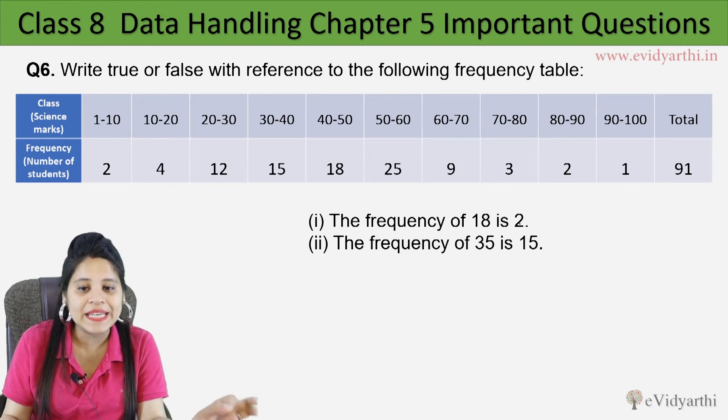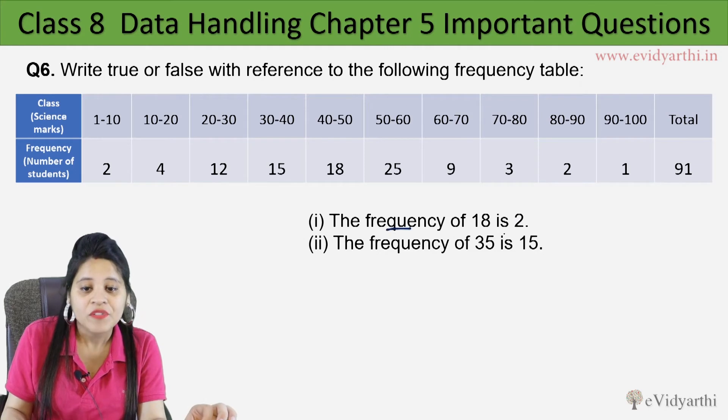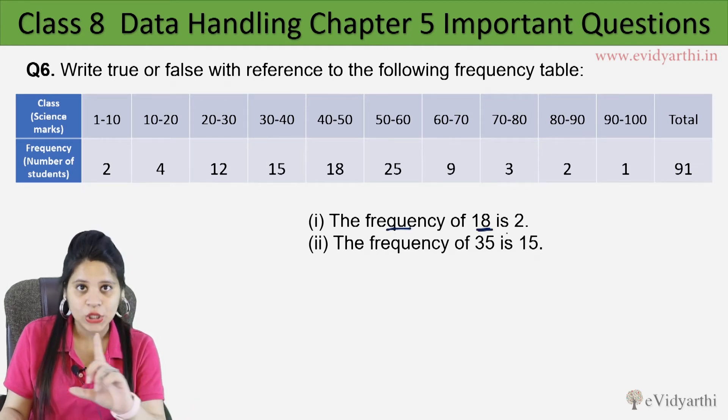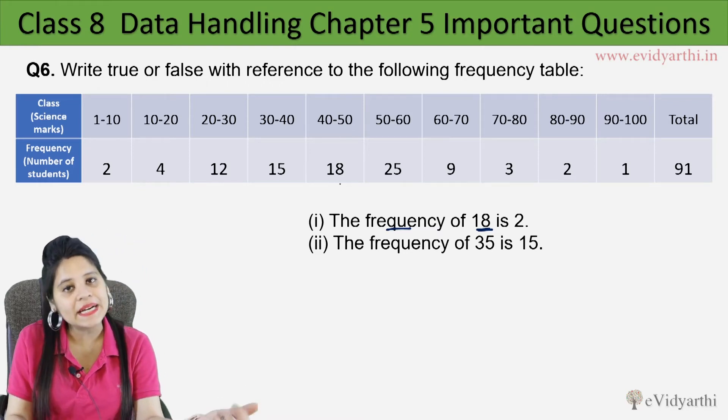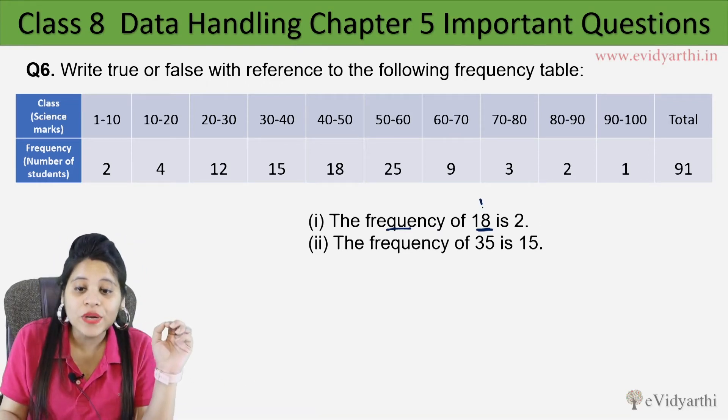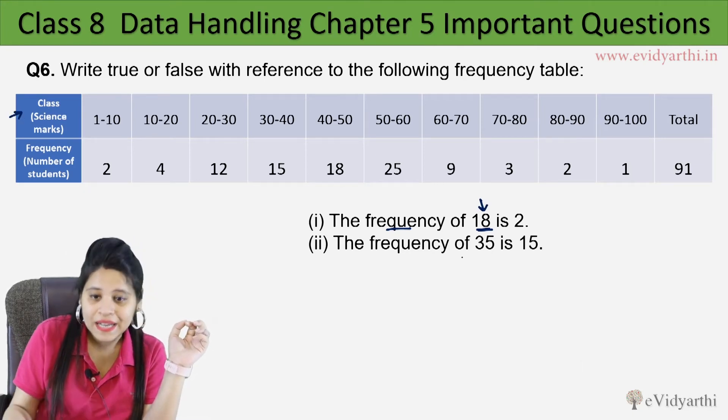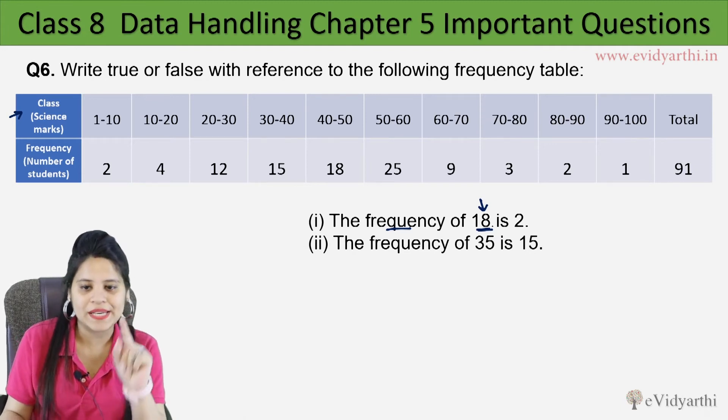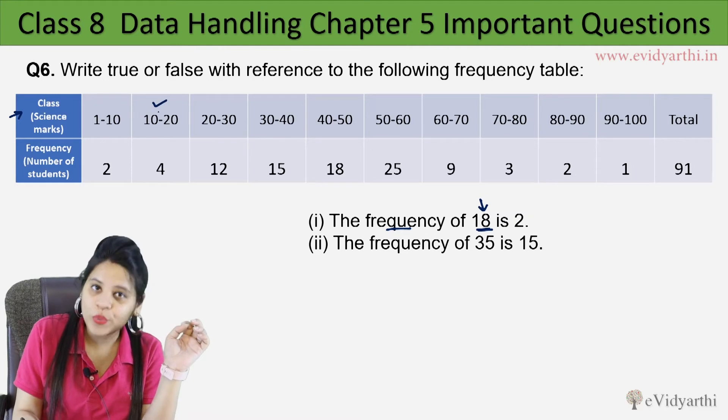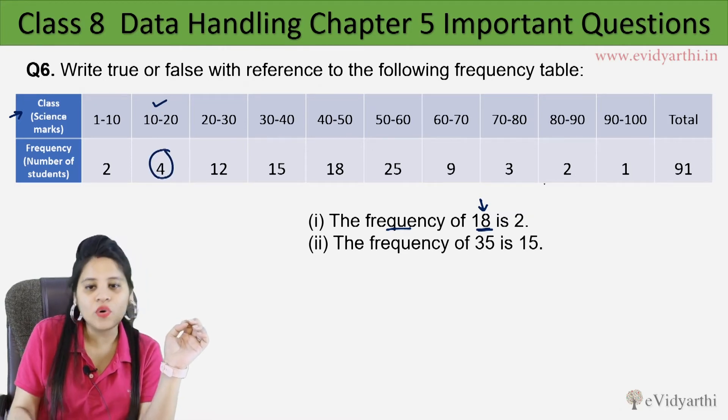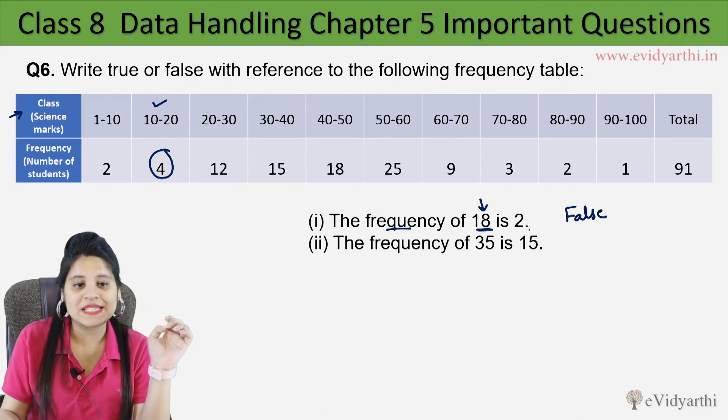First, the frequency of 18 is 2. Now if you see 18, you will think you don't know 18. What are you asking? 18 is the frequency. So let's see this 18 in class. Where do we go to our class interval? So where do we put 18? 10 to 20. So what is the frequency? 4. So that means our statement is false. It's not frequency 2.